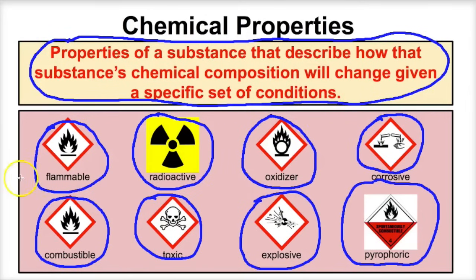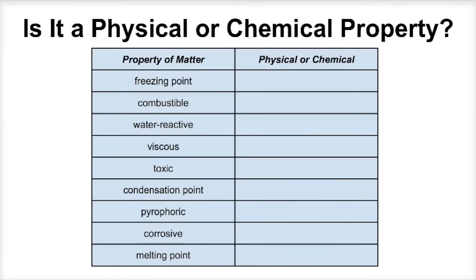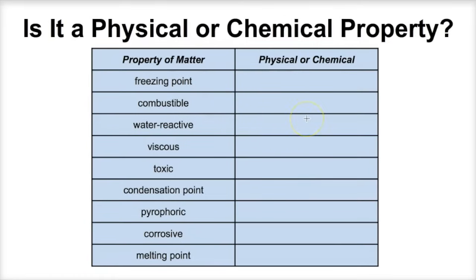Let's take a look at a few examples and see if you can determine whether they are physical or chemical properties of matter. I advise that you go ahead and pause this video at this point and work through these yourself. See if you can figure out if these are physical or chemical properties. Freezing point — that's going to be a physical property of matter. That's not telling us how that substance is going to change chemically.